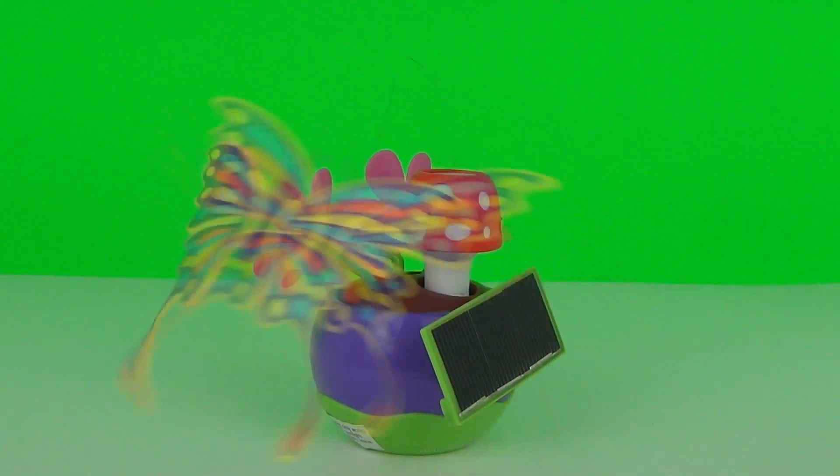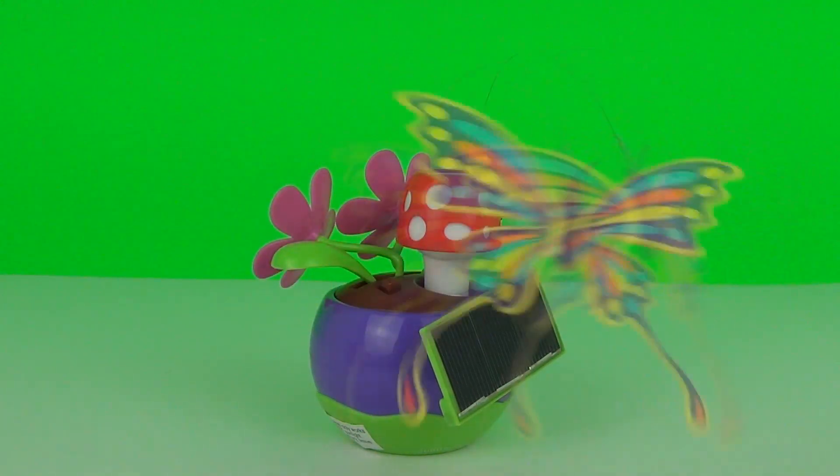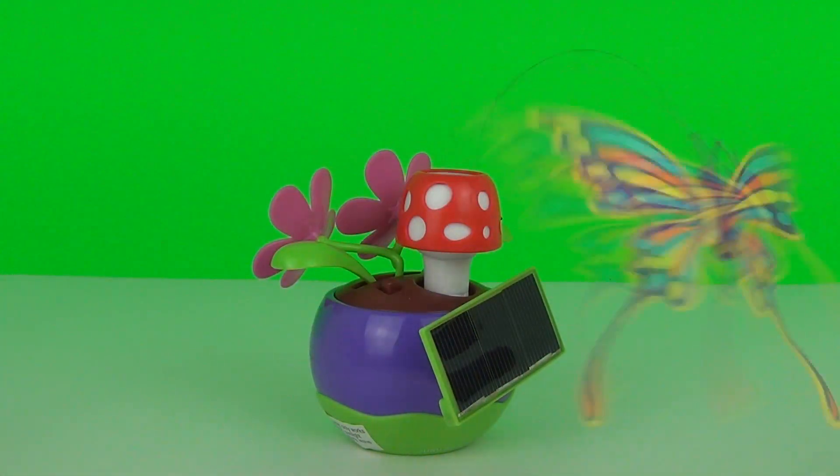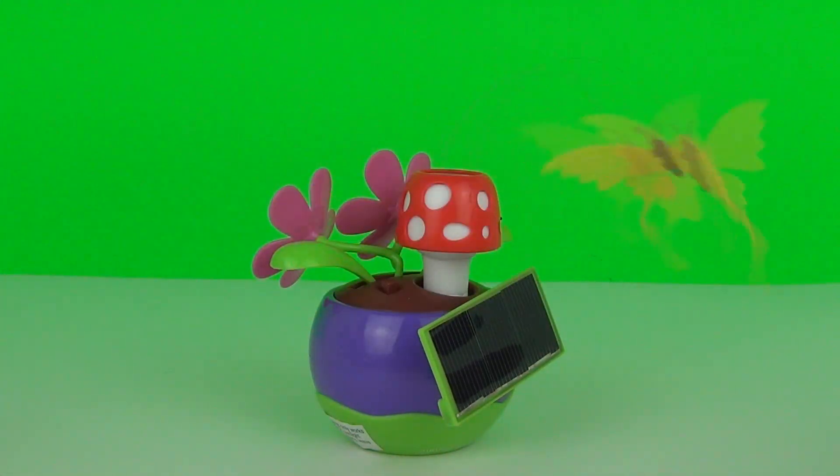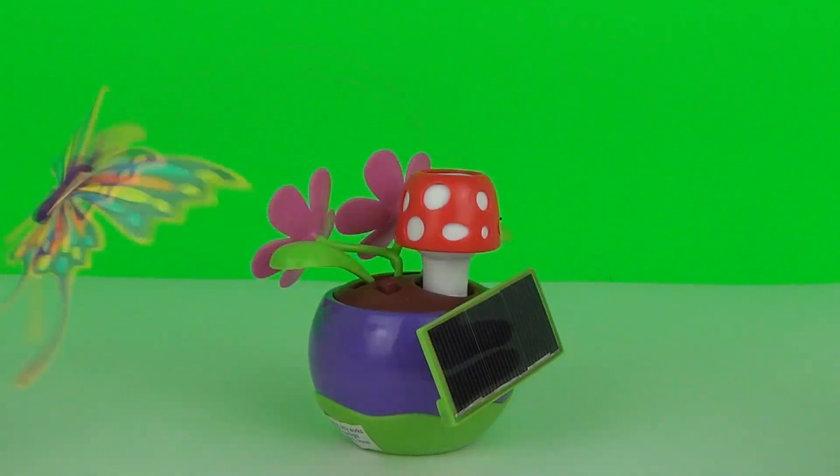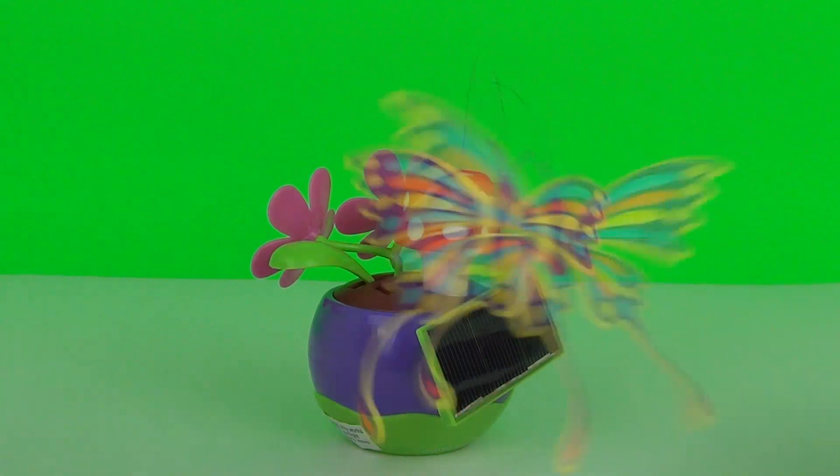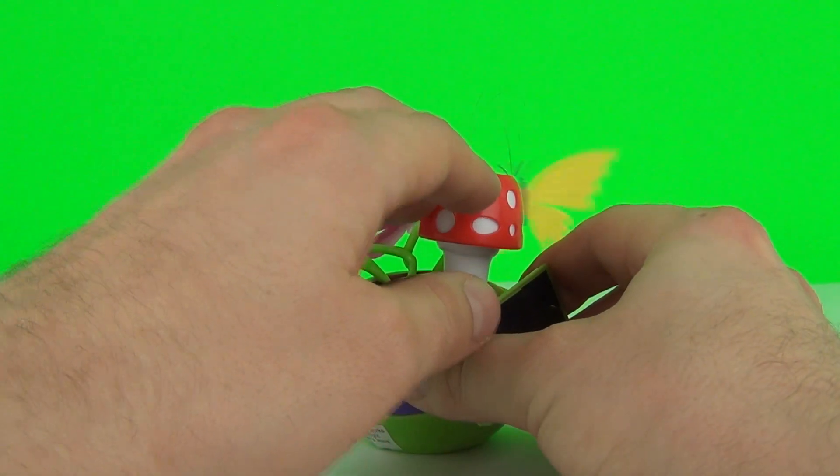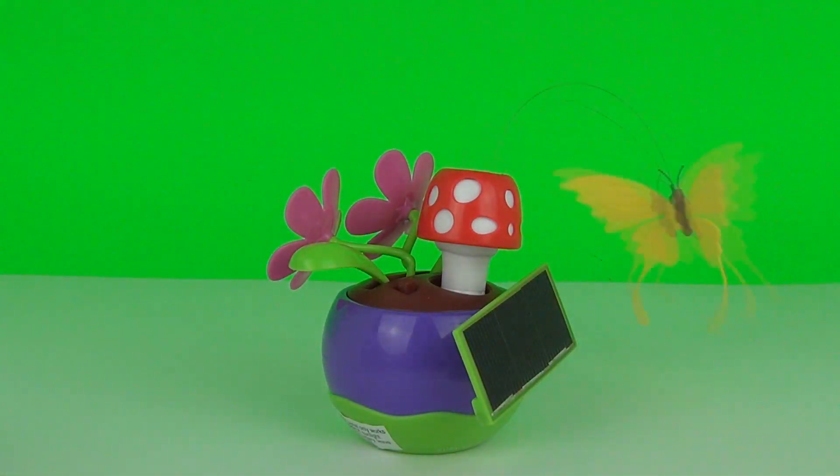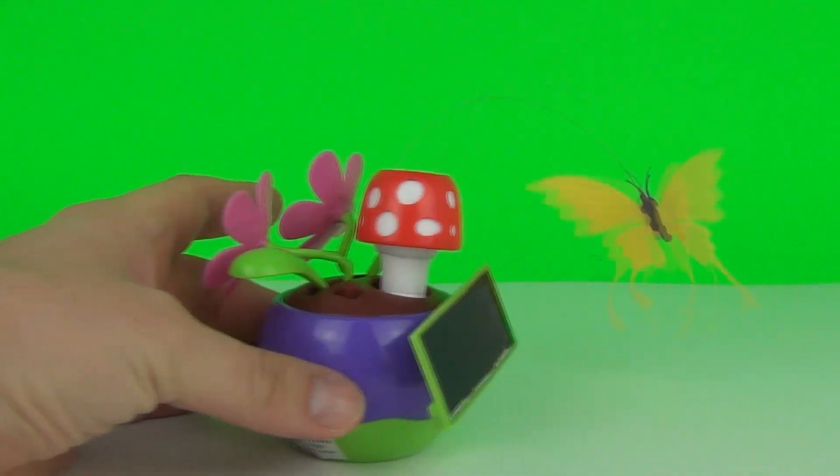How awesome is that guys, going faster and faster now. As you can see, with the mushroom in the middle in central position, the butterfly will keep flapping around in a circular motion. But now when I move the mushroom, you will see what happens. If I move it to that side, you can keep the butterfly in that position.